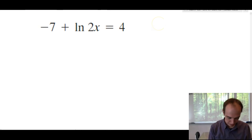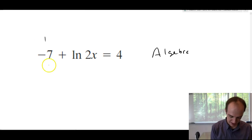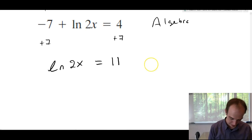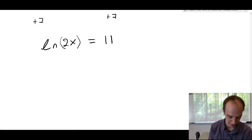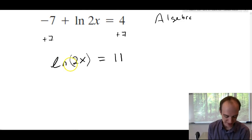Just like before, step one is algebra. So, we're going to add seven and you get the natural log of 2x is equal to 11. Some of you have been asking me, do you need parentheses around this? As long as it's the only thing around here, you don't need parentheses. But it's also not wrong to include them. So, that's your call. I'll leave it up to you.